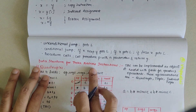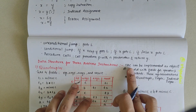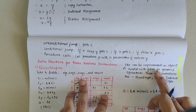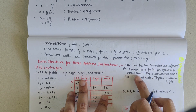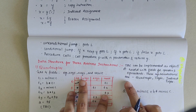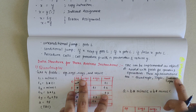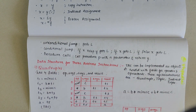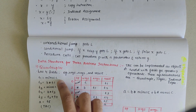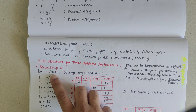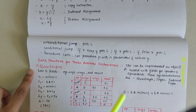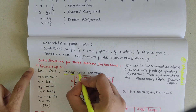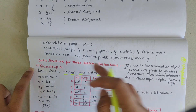Now we will look into the data structures for three address instructions. A three address instruction can be implemented as objects or records with fields for operator and operands. The representations are quadruple, triple, and indirect triple. In a quadruple, by the name, we understand there are four fields: operator, argument one, argument two, and the result is also stored.